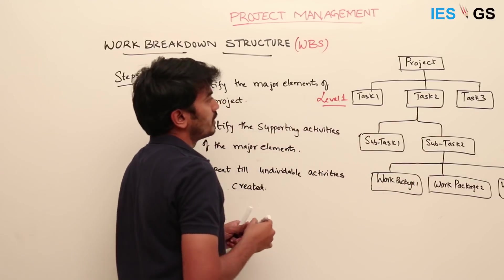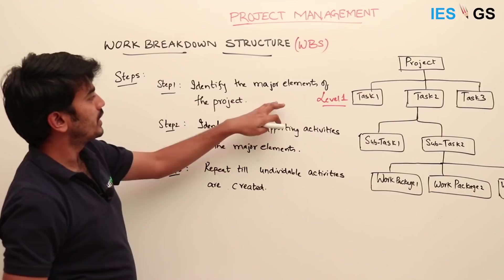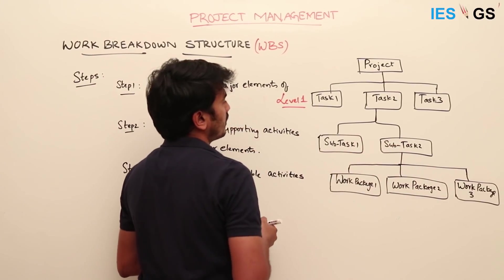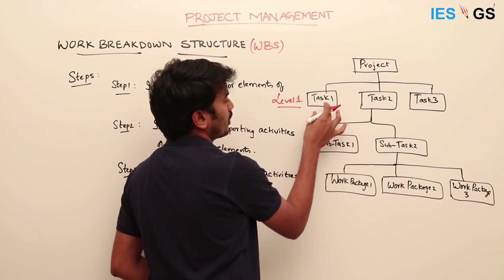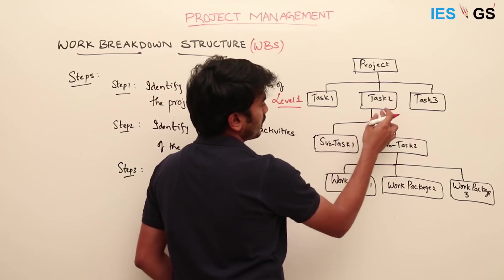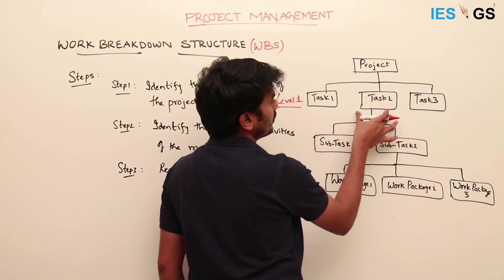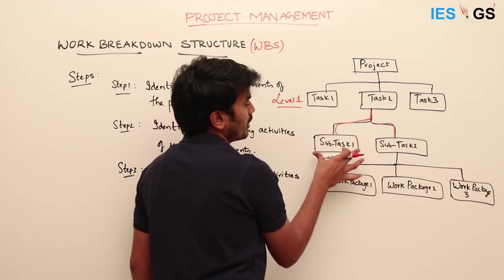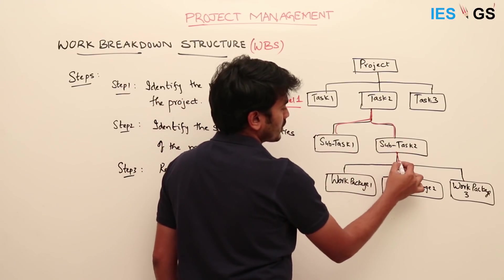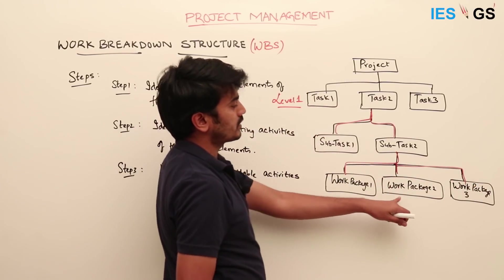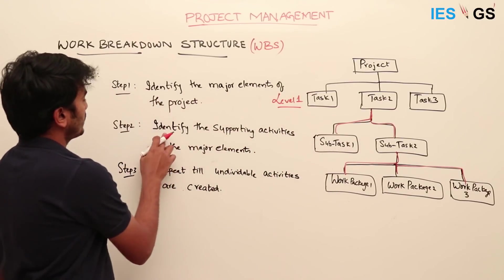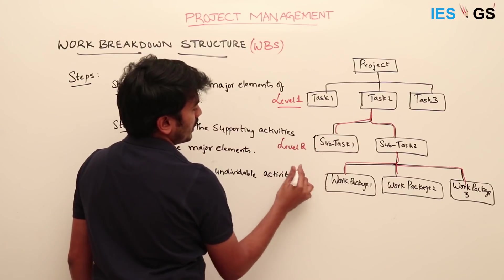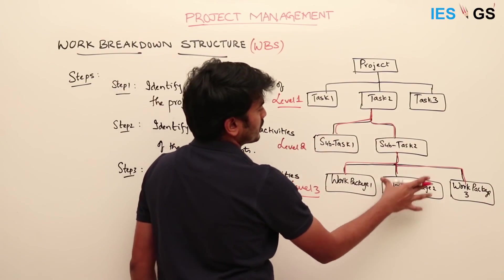Once we have the major elements, we break them down again — Task 1, Task 2, and Task 3 — into the next level of activities. What does Task 1 comprise of? What does Task 2 comprise of? Here in this picture, Task 2 consists of Subtask 1 and Subtask 2. Subtask 2 further forms three activities called work packages: Work Package 1, 2, and 3. This is Step 2 — identifying the supporting activities of the major elements. Work packages at Level 3 support Subtask 2.